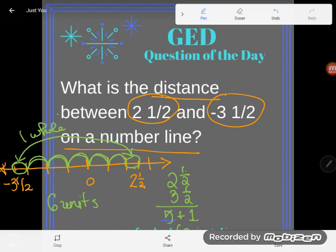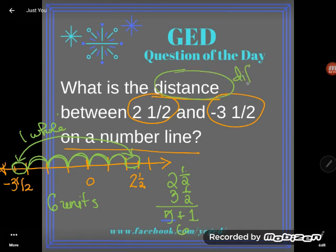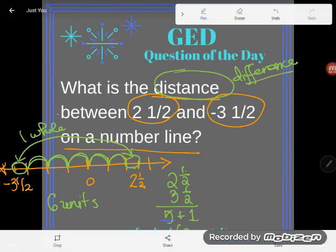Now, some of you guys are like, Kate, do I really need to draw a number line? No, you don't. Distance is synonymous with difference. You can just subtract the two numbers, but do make sure, remember, difference is always positive. Distance is always positive. So you'll want to start with the bigger number.